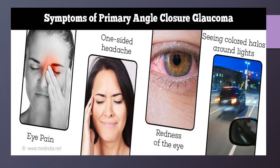The symptoms of primary angle closure glaucoma include eye pain, one-sided headache, redness of the eye, and seeing colored halos — rainbows seen around objects. There can be episodes of unilateral transient blurring of vision, nausea or vomiting, rapidly progressive impairment of vision, photophobia, and lacrimation.